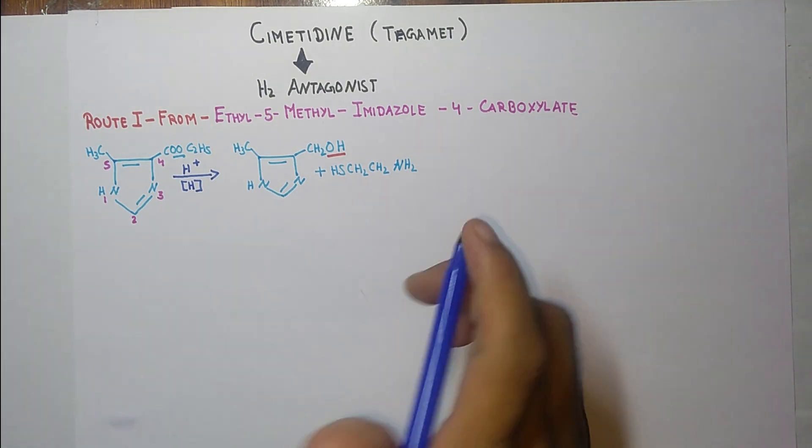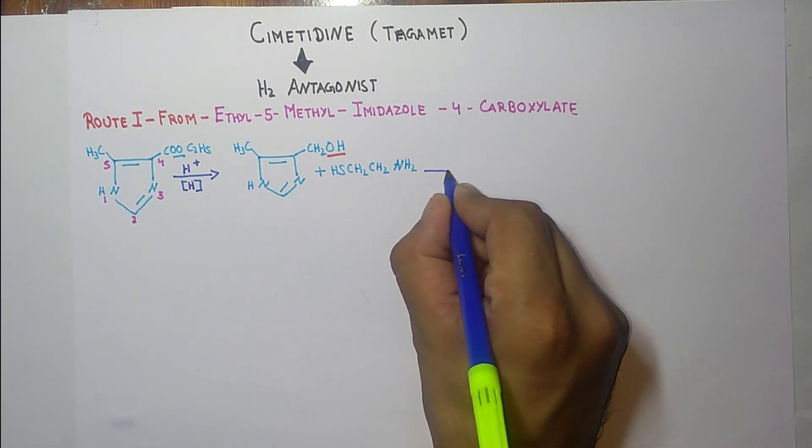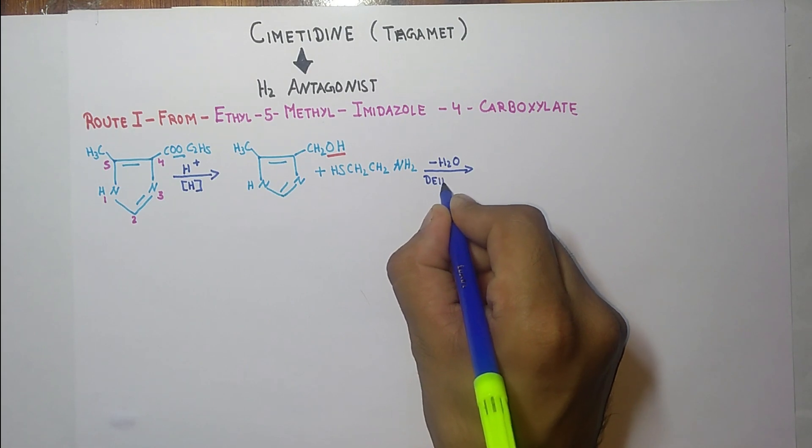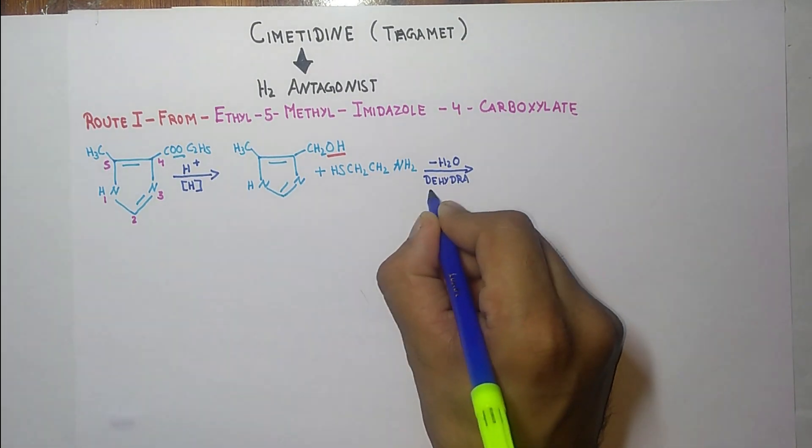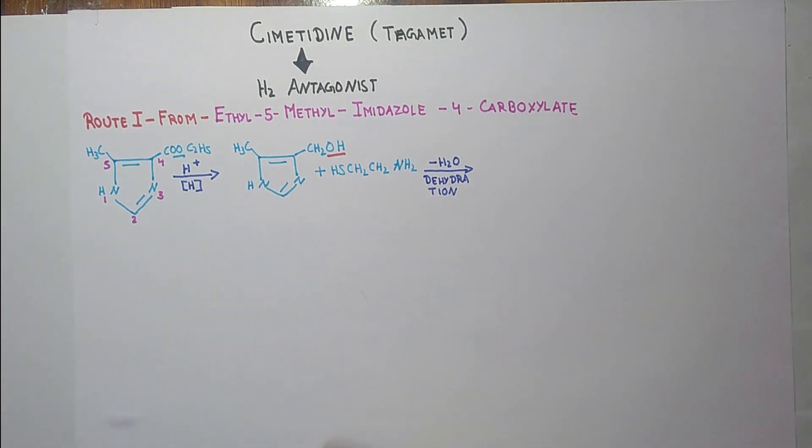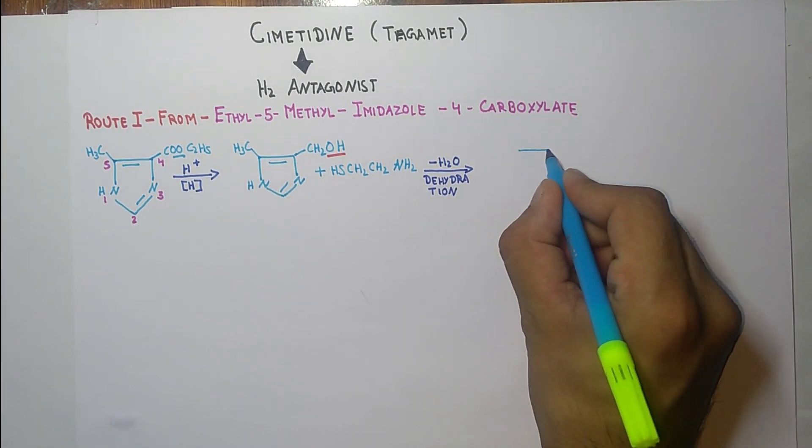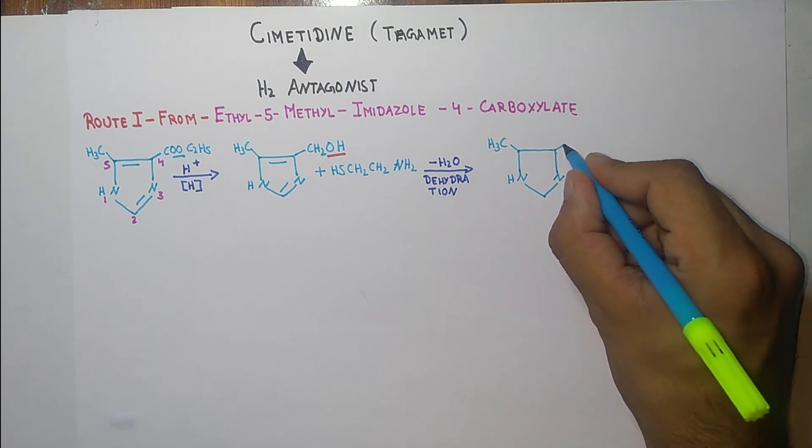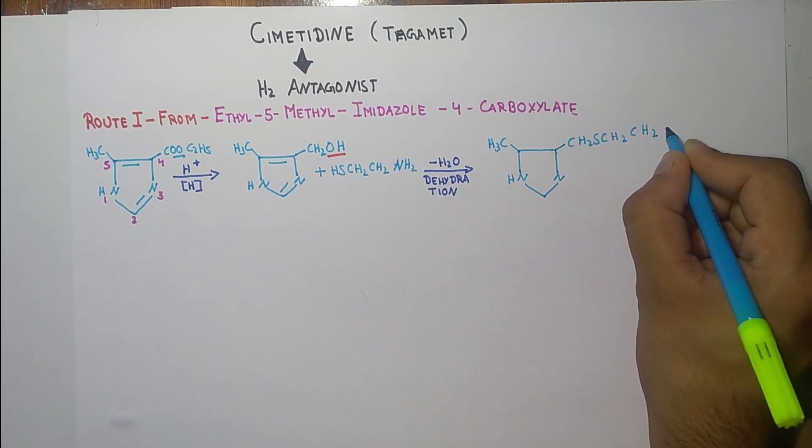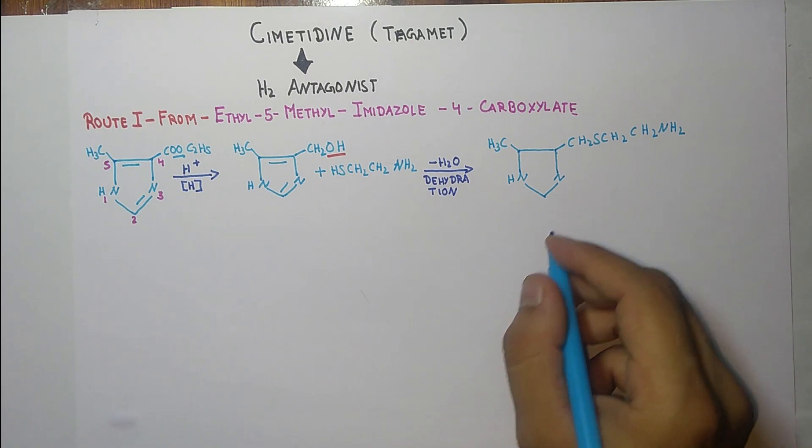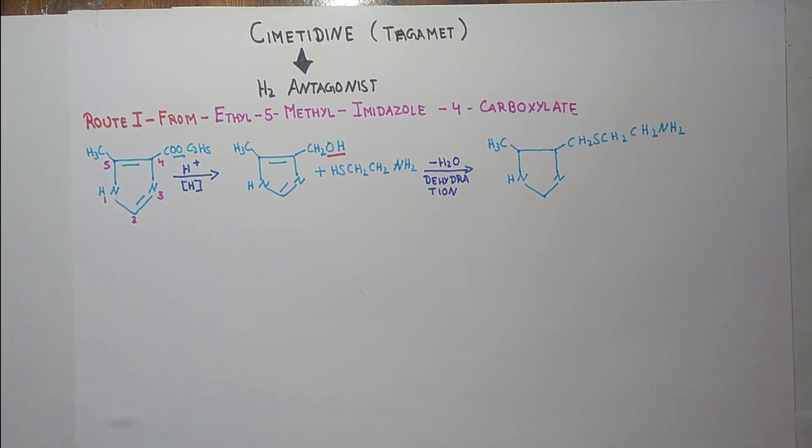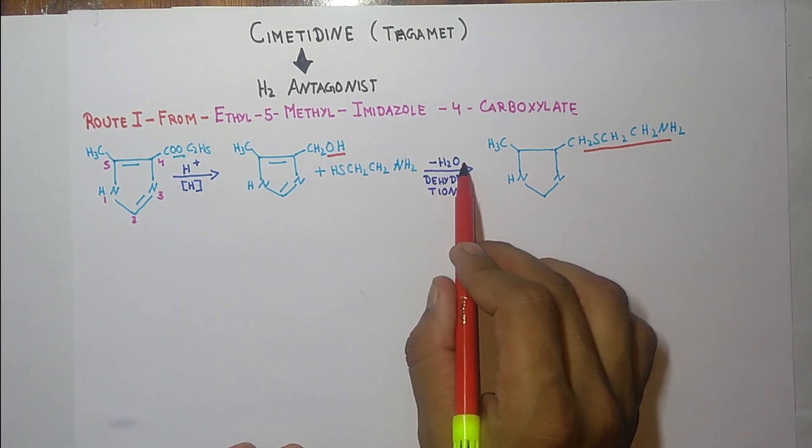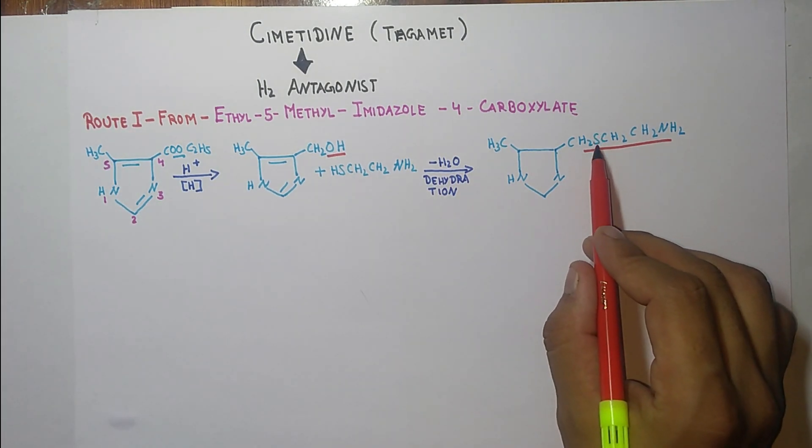So now with the help of this molecule and in the presence of dehydration, means removal of H2O, the structure will be... This group attaches here and from this the H2O gets removed, means minus H2O, so there will not be a OH here.